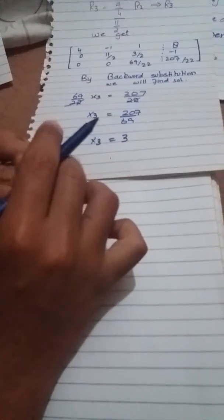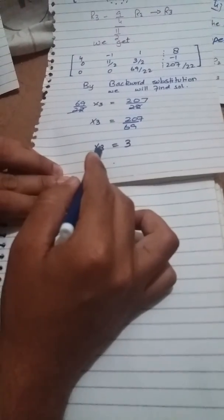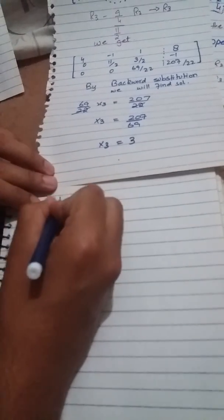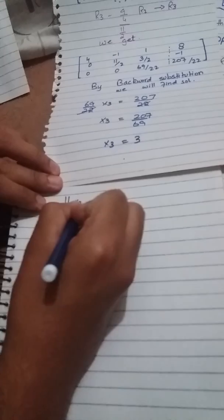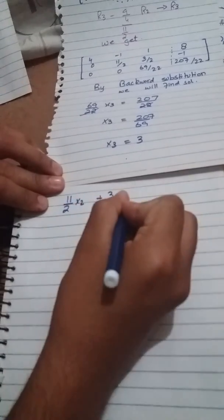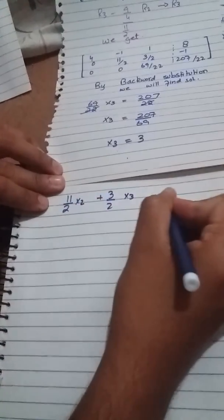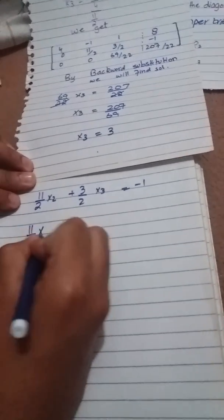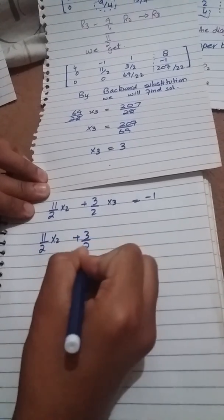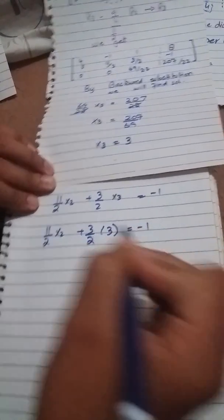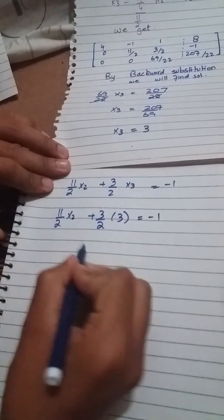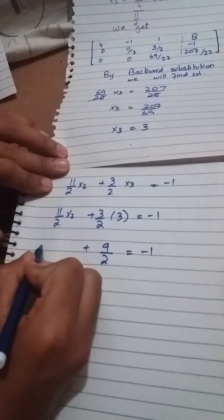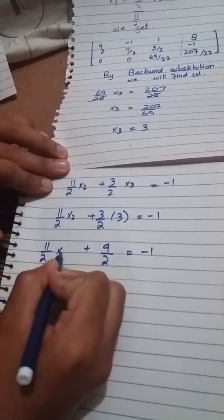We found X3 with backward substitution. Now find X2: 11/2 X2 plus 3/2 X3 is equal to -1. Put the value of X3 which is 3. 11/2 X2 plus 3/2 times 3 equals -1. 3 and 3 becomes 9/2 is equal to -1.